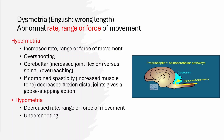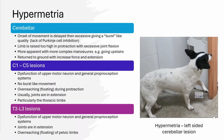Hypometria, on the other hand, is decreased rate, range, or force of movement, characterized by undershooting — a reduced range of movement. We see hypermetria (this lack of control and overshooting of a limb movement) in three circumstances: cerebellar disease, high cervical lesions (C1 to C5), and T3 to L3 lesions, although the latter will affect only the pelvic limb. These will look different with different lesions.